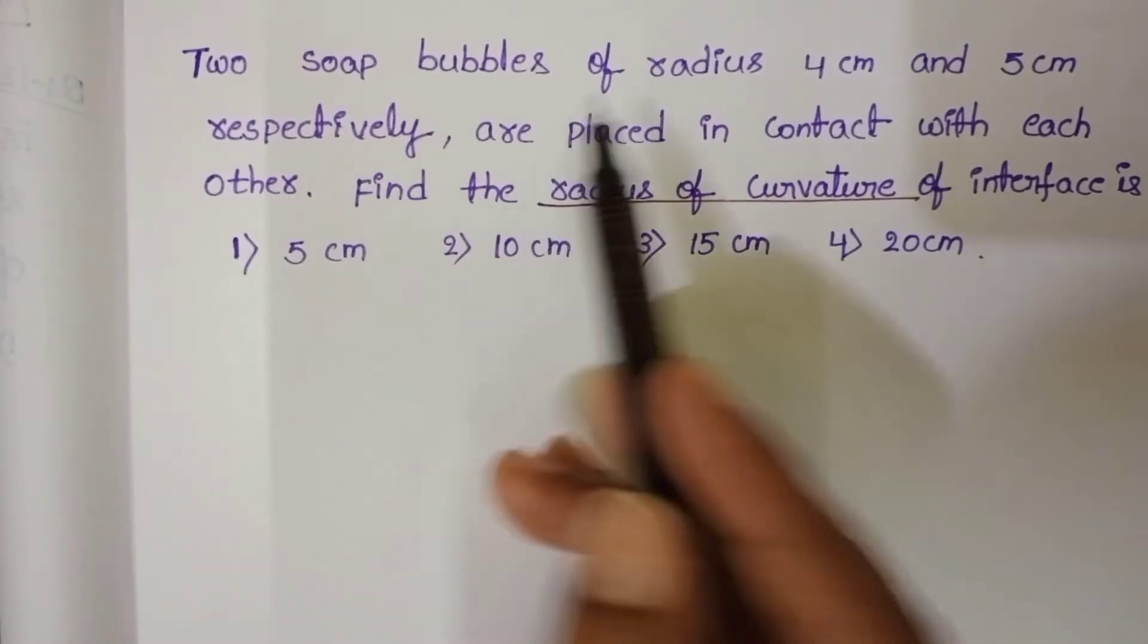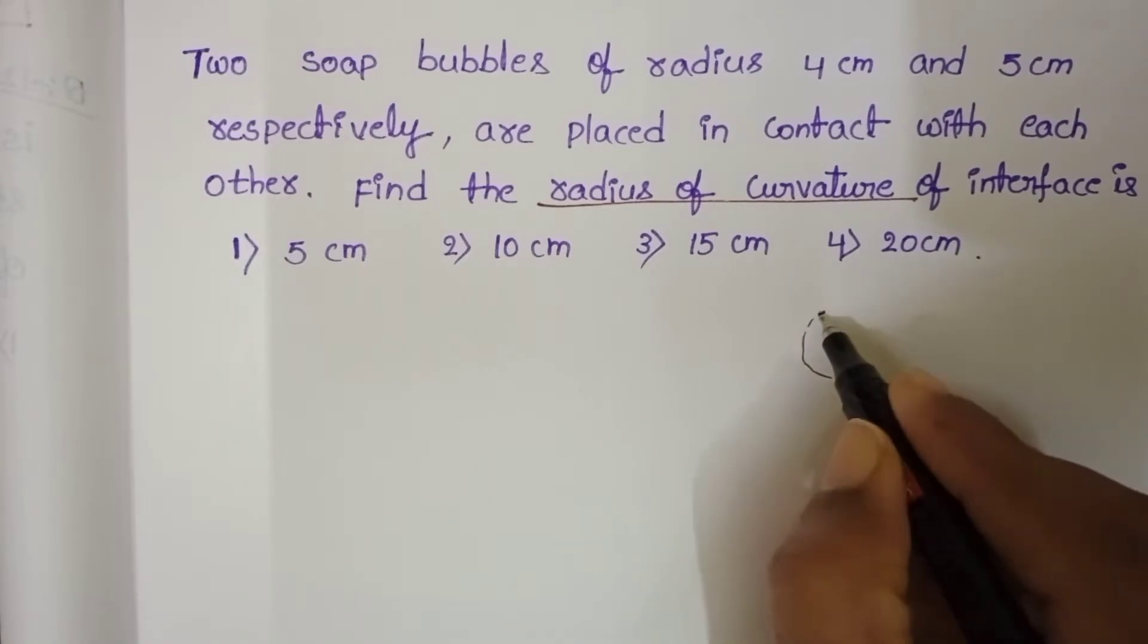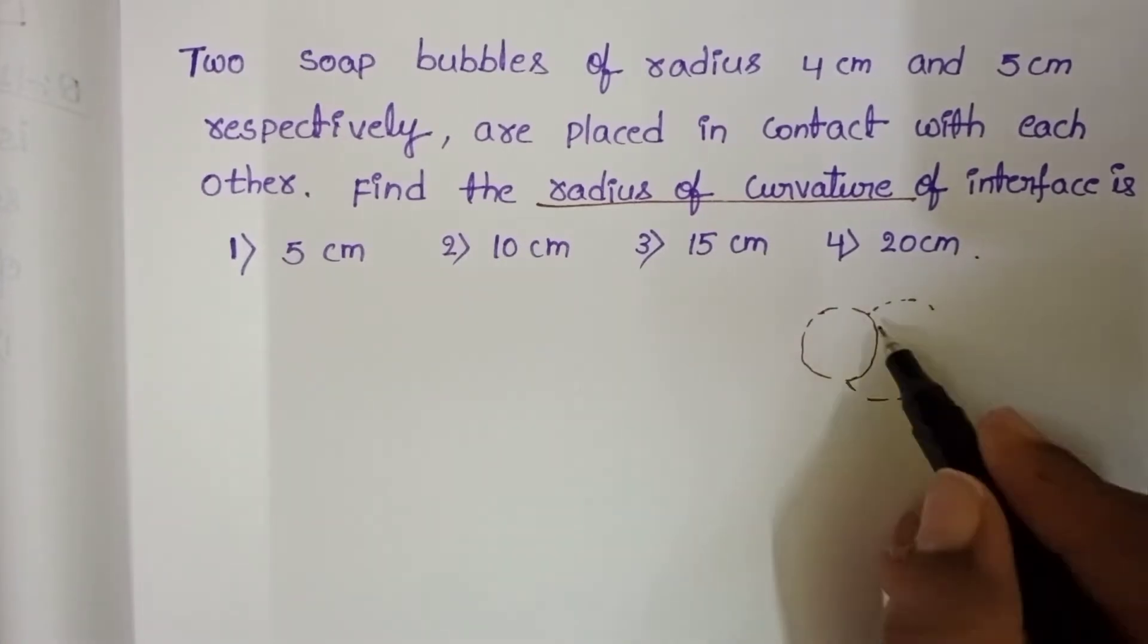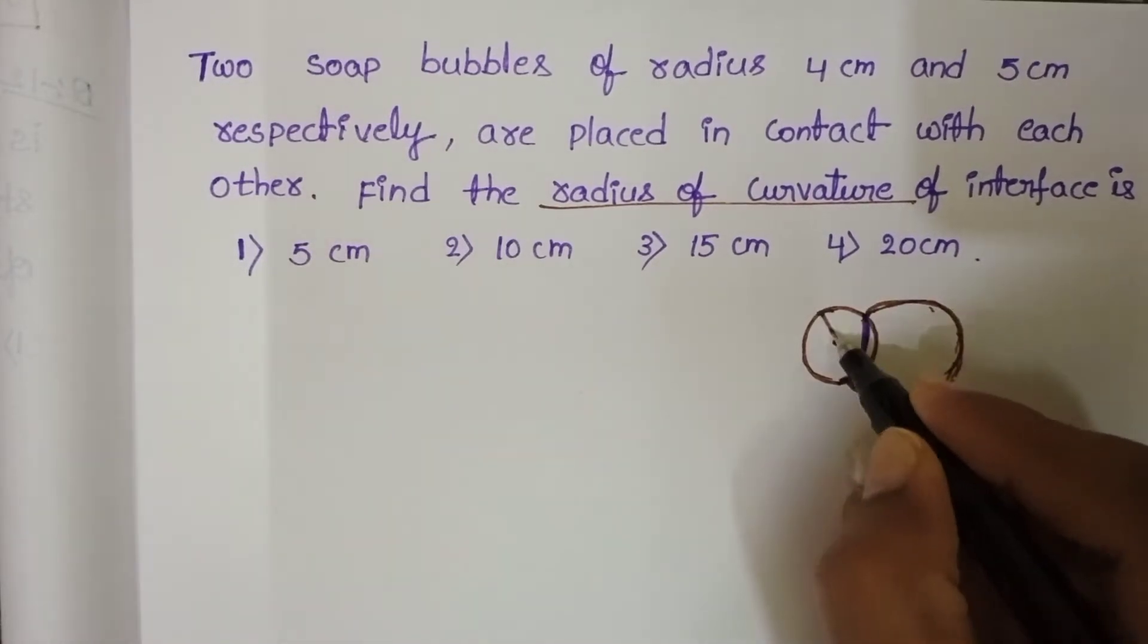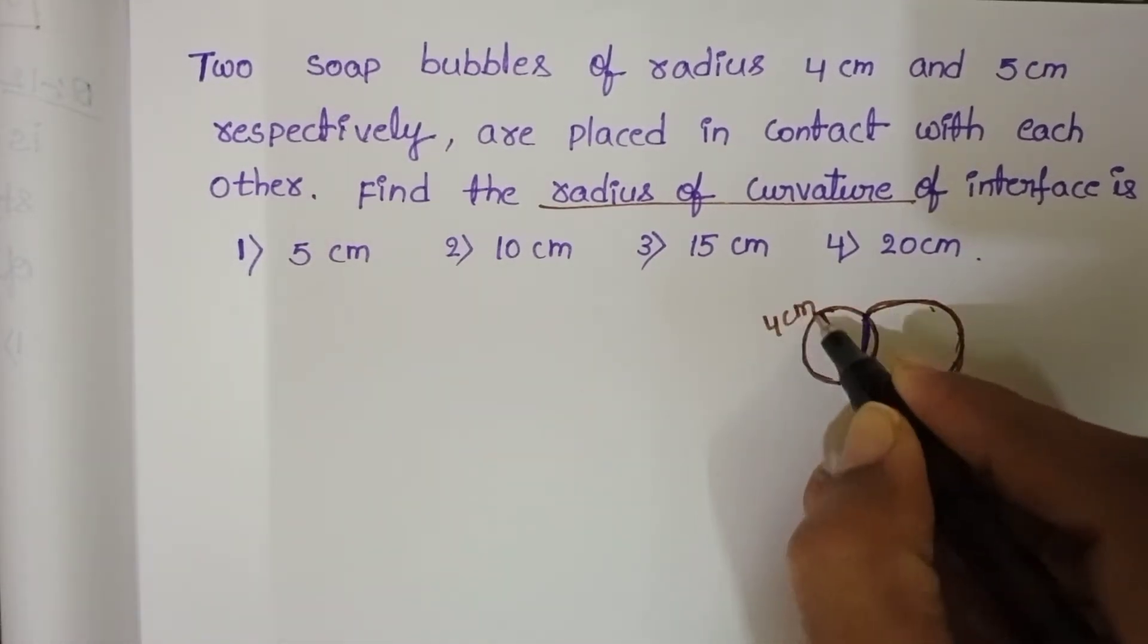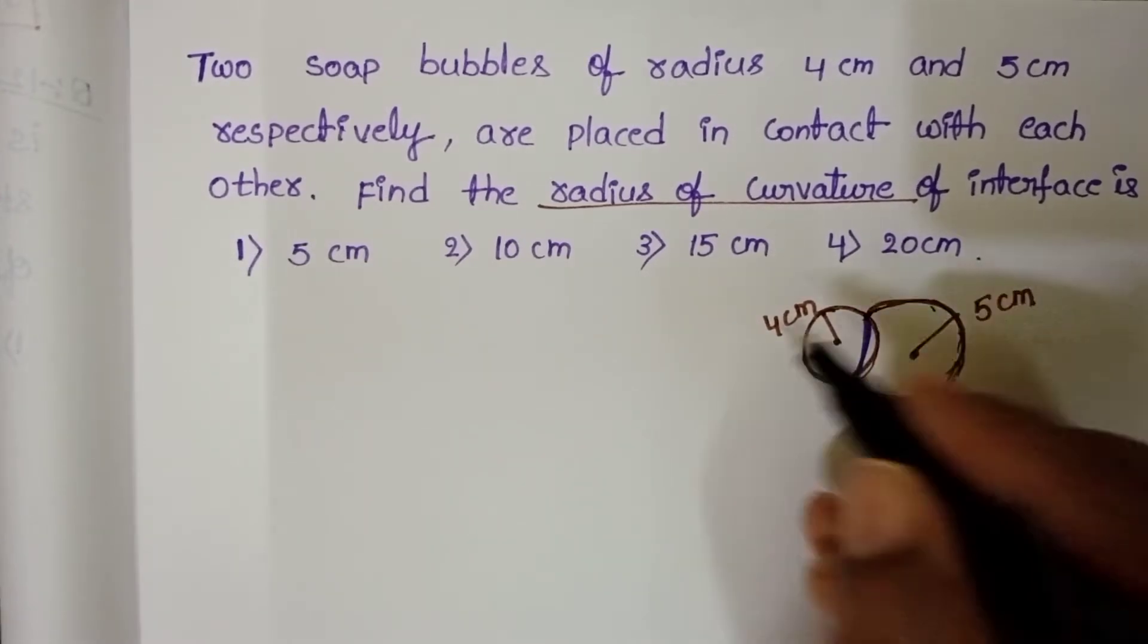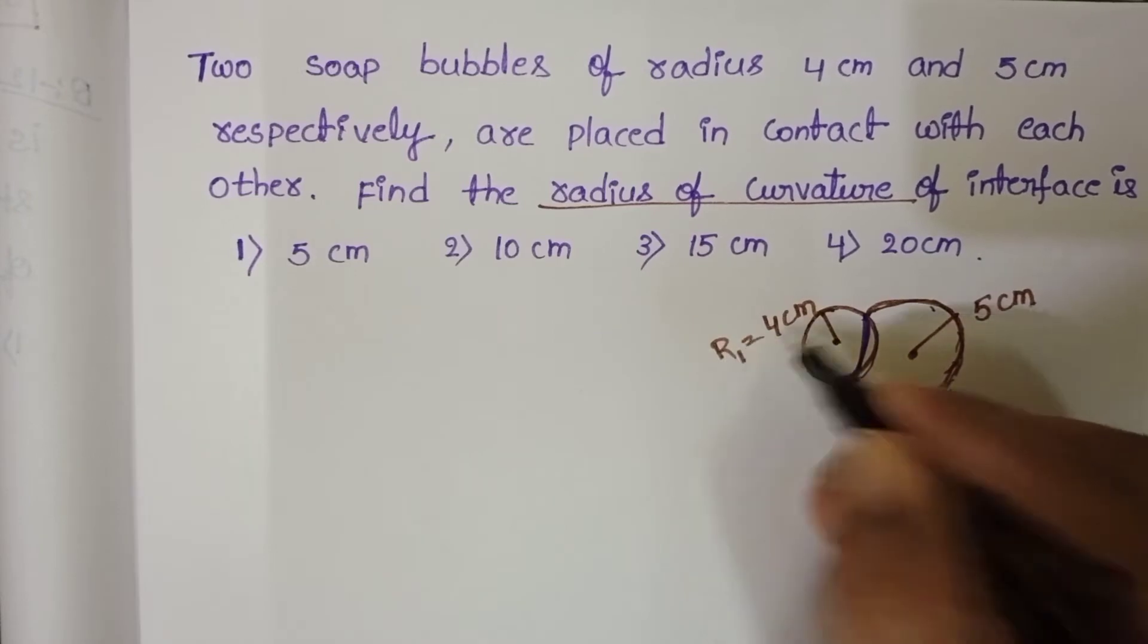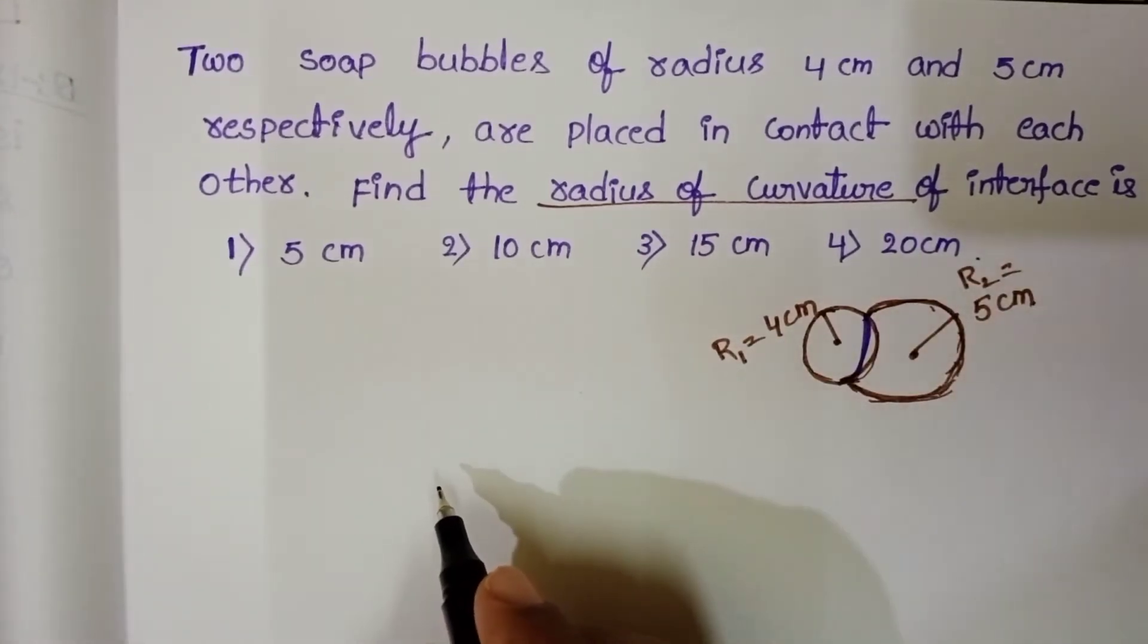Here two soap bubbles are in contact. First bubble of radius 4 cm, second bubble of radius 5 cm. Let R1 equals 4 cm and R2 equals 5 cm.